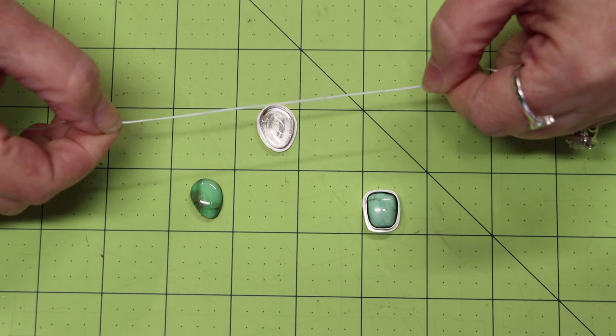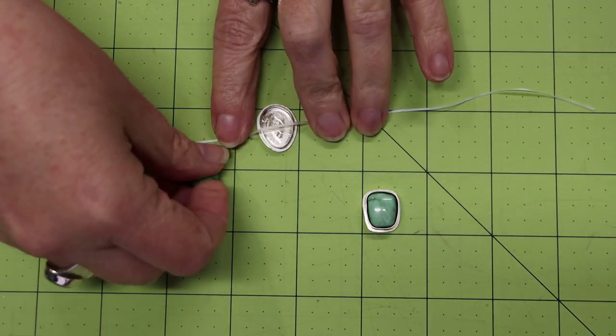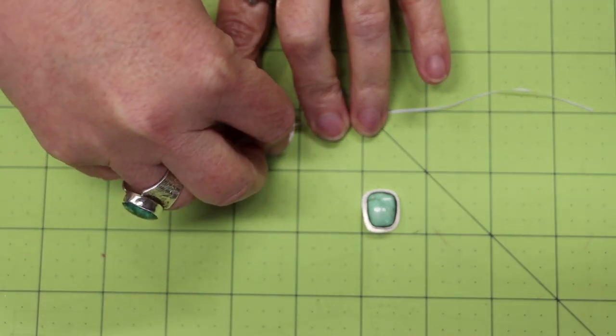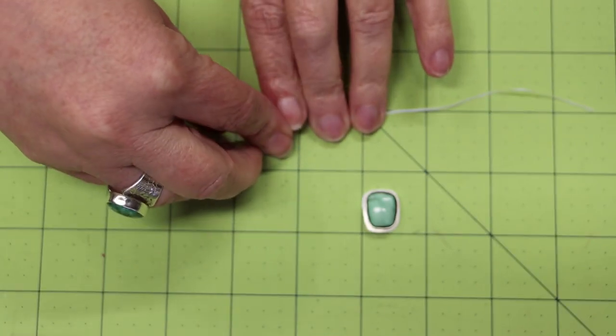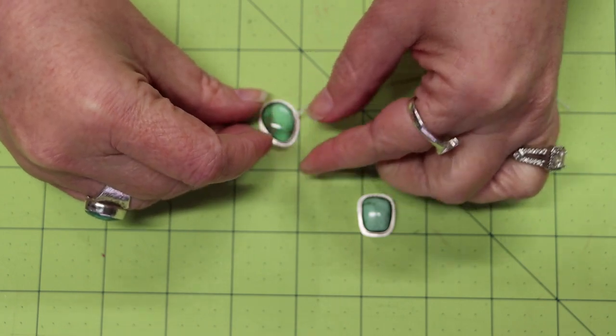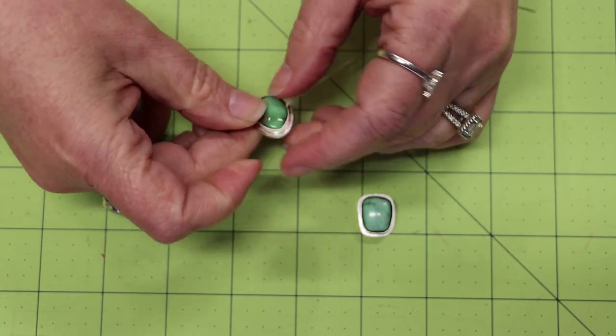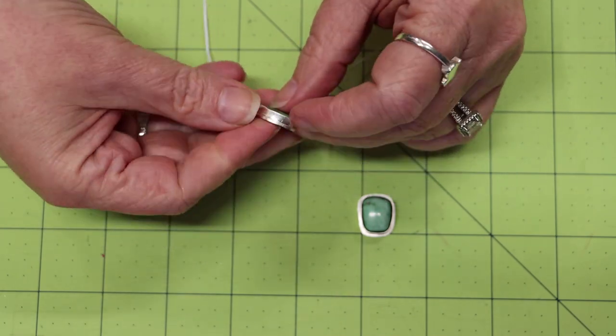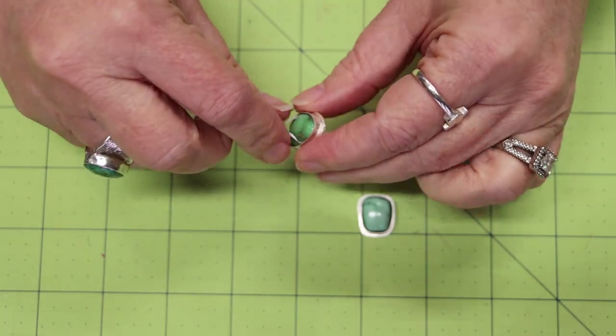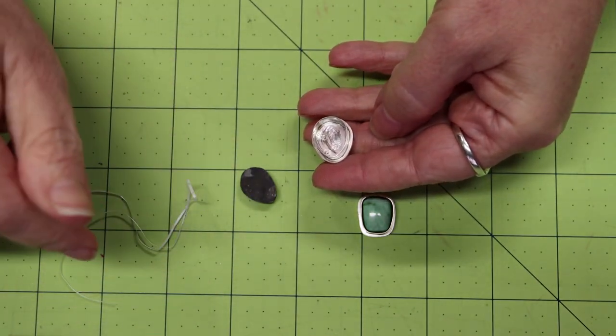Put it across your bezel cup before you put your stone in to check the fit. This will allow you to easily pop that stone back out. So I've got the stone in there, I've got my dental floss, and the stone is in there pretty good. Now I can just pull on this dental floss and pop that stone right out. This is the best way.